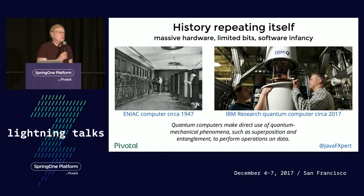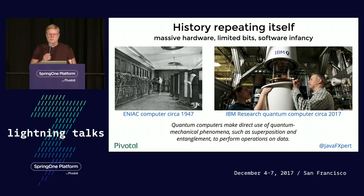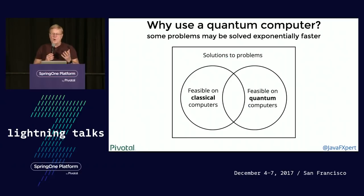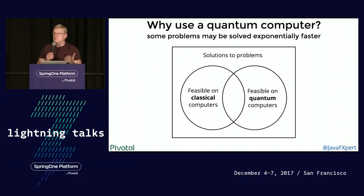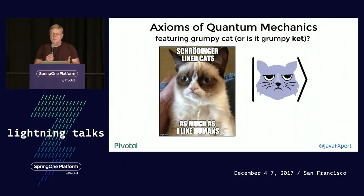In the 1940s, computers took up large rooms, bits were scarce, software was in its infancy — and it's repeating itself now. Quantum computers take up large rooms, there's a limited number of quantum bits, and everything's brand new. Why use quantum computing? There are some classes of problems that will never be suited for classical computing, like breaking RSA algorithms or factoring large numbers into primes. With quantum computing, you get an exponential speed-up for some problems.